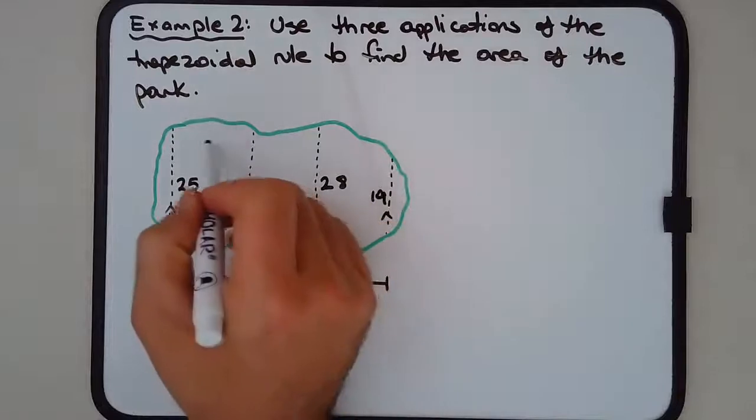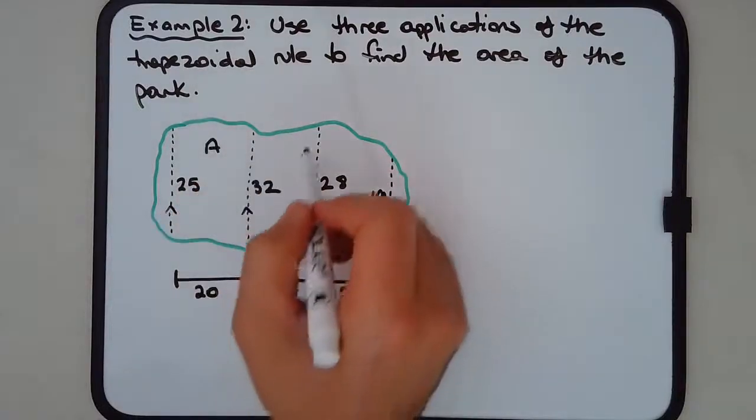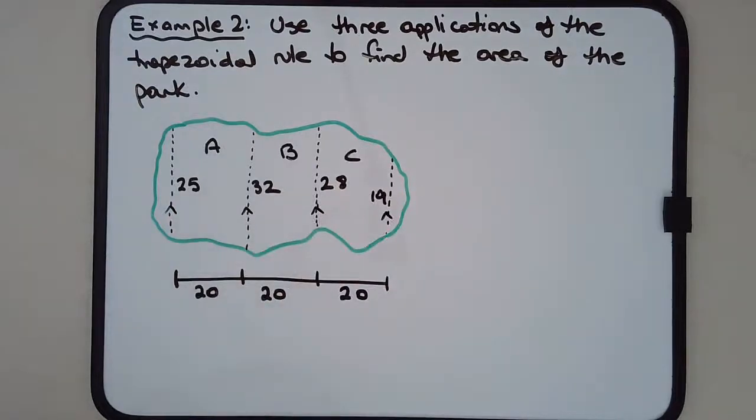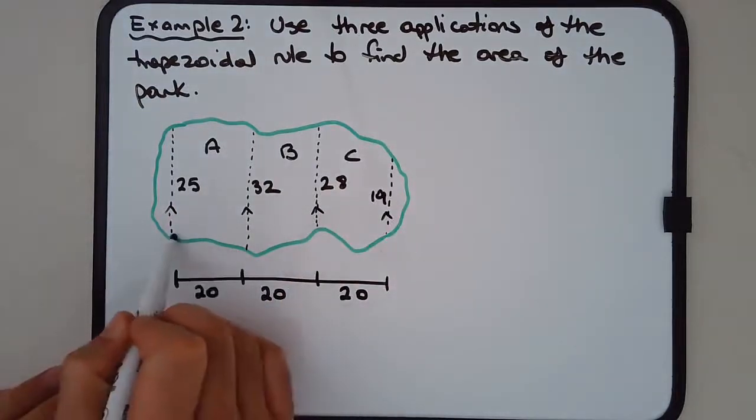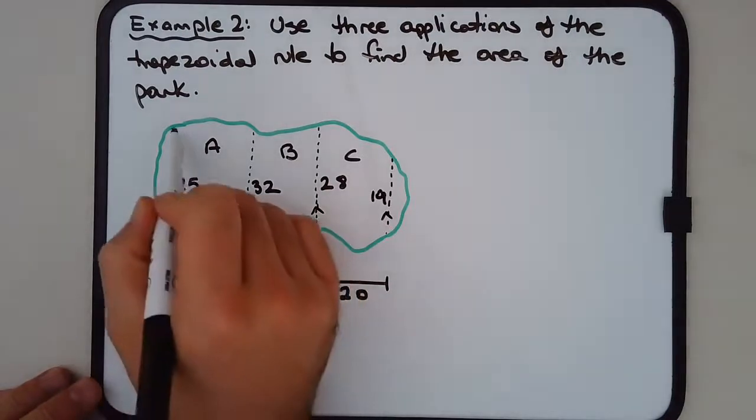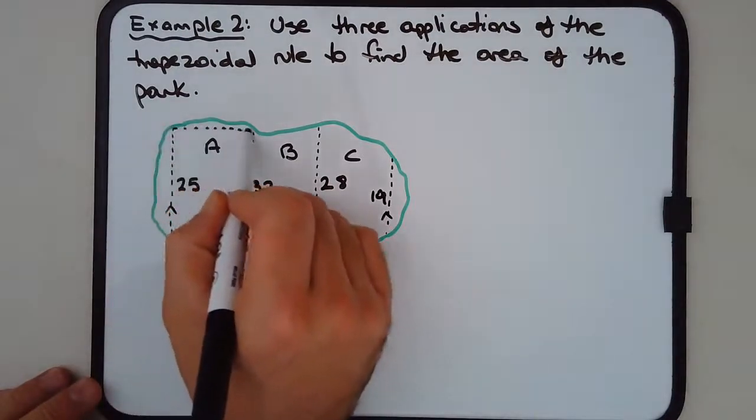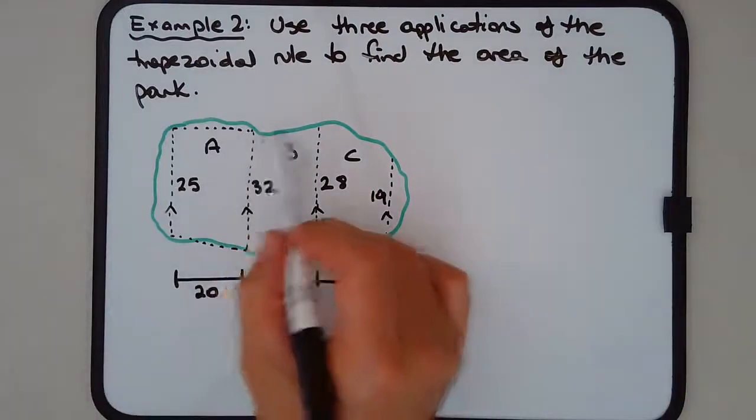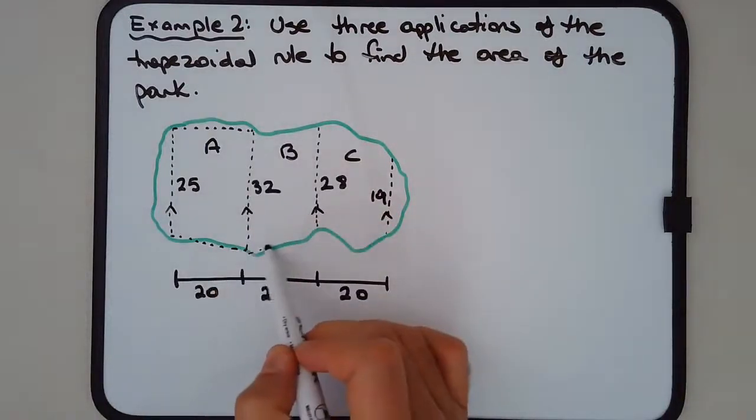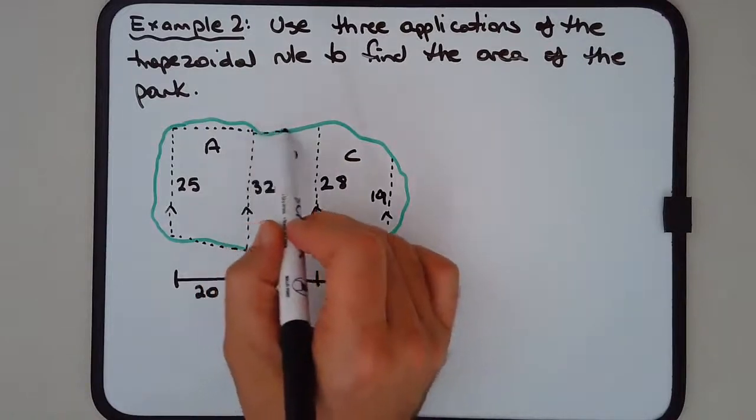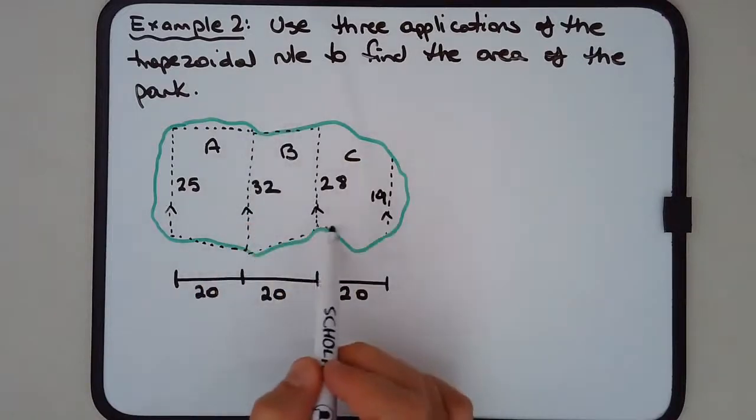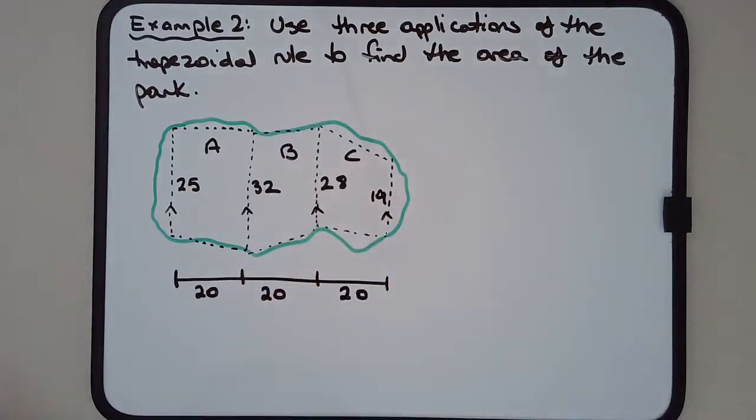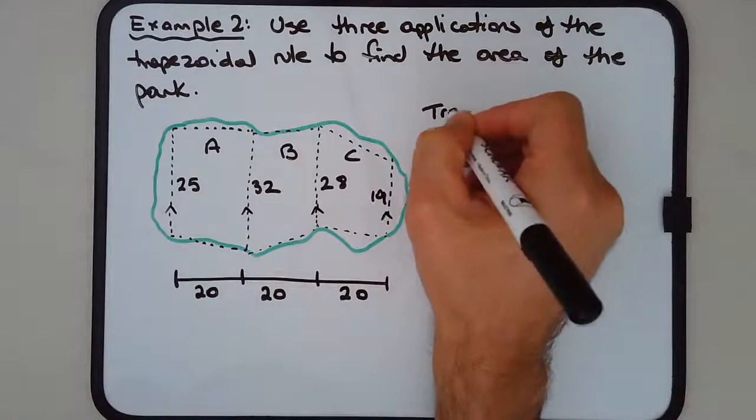I'm going to label these trapeziums. We've got trapezium A, trapezium B, and trapezium C. I could draw in the trapeziums - that could be the first trapezium there, then we have trapezium B, and then trapezium C. We can work this out individually.